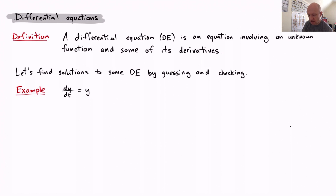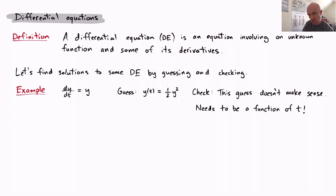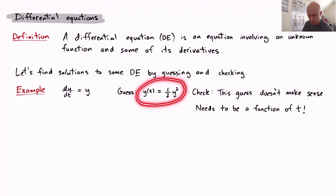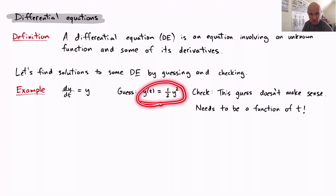For our first guess, I'd like to make a guess that's not just incorrect but kind of nonsensical, to show an easy mistake many people make when first thinking about differential equations — which is to try to integrate both sides and treat y as an independent variable. If we integrate both sides as in the last example, we might get y of t equals ½y squared. But this guess doesn't even make sense, because ½y squared is not a function of t at all. It's a cautionary tale: don't treat y as an independent variable.